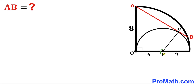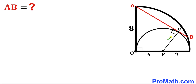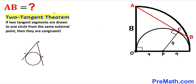I have connected center P with the point of tangency C. Recalling the circle theorem, the angle between the radius and tangent is always 90 degrees. So angle PCA is 90 degrees, since AB is the tangent and PC is the radius of the semicircle. Since the radius is 4, PC length is 4 units.